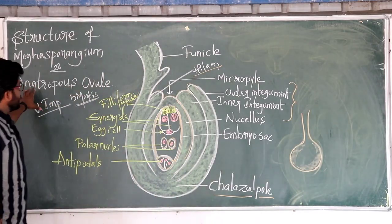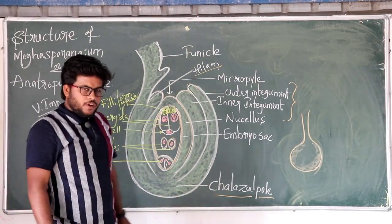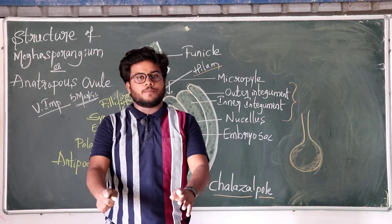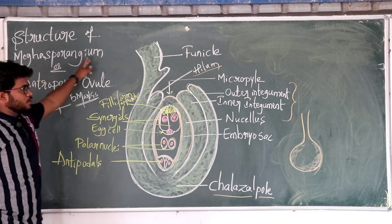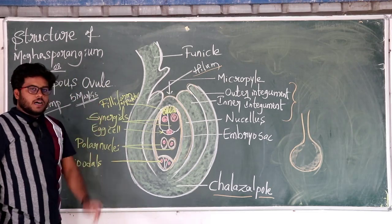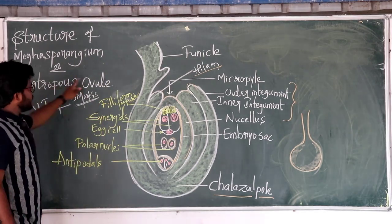Now, we are going to study about one of the very important concepts of this entire topic, that is the structure of Megasporangium, which is also called as the Anatropous Ovule.